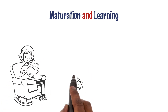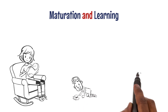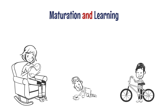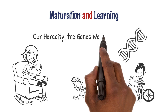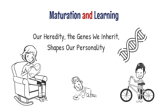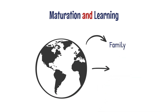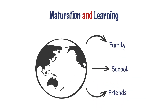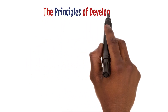Next up we have maturation and learning. Maturation means that certain skills, like sitting and walking, are in our genes and develop when the time is right. Learning, on the other hand, is acquiring new skills through experience and practice. Our heredity — the genes we inherit — shapes our personality, but our environment, including family, school, and friends, influences how much we develop these inherited traits.